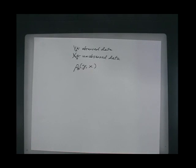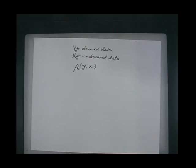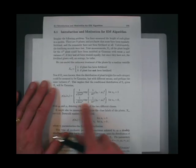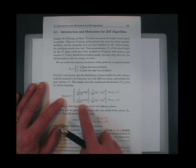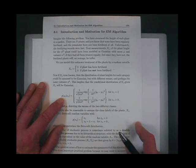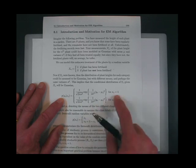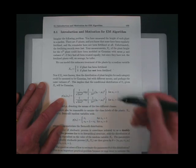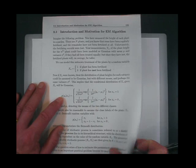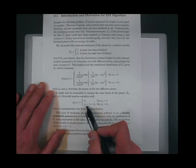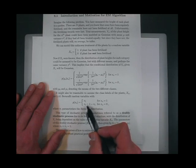You've got to read the notes — I go through all this and explain it from a different point of view. So there are two classes. The conditional distribution of Y given X is Gaussian with the same standard deviation but two different means. This is page 155, section 8.1 of the notes. If X is zero, it's one mean; if X is one, it's another mean — one corresponds to the fertilized plant and zero to the unfertilized. The fertilized plants on average will be taller.